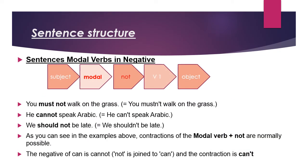Now we will look at the negative structure. The structure is: Subject + Modal + not + Verb (first form) + Object. Look at the example: 'We must not walk on the grass.' 'Must' is the modal. We always place 'not' just after the modal — between the modal and the main verb.